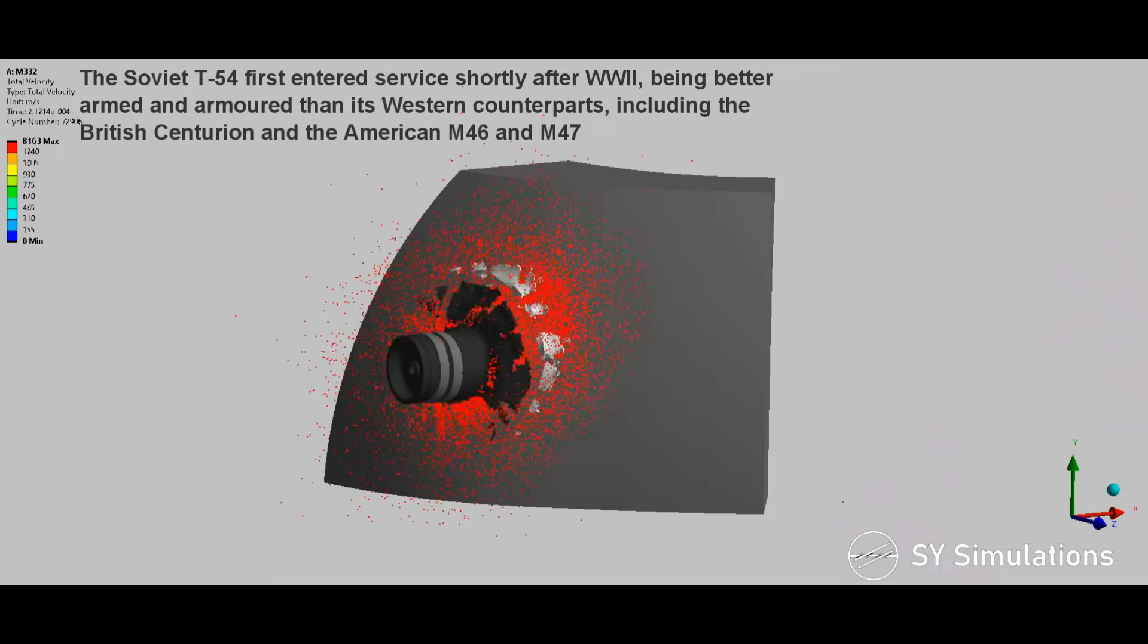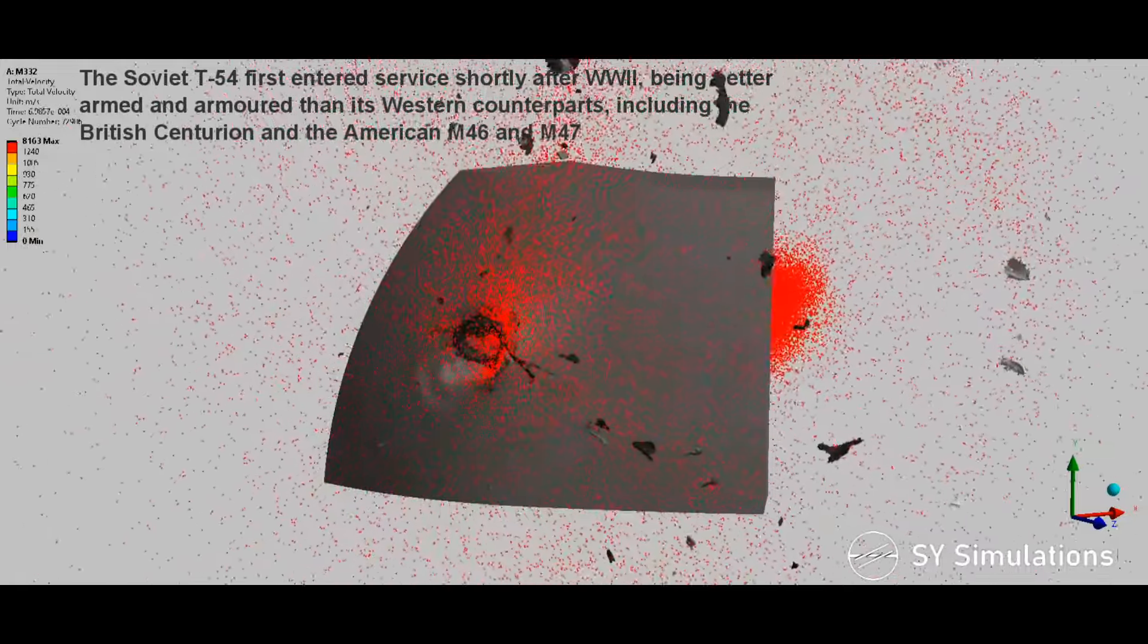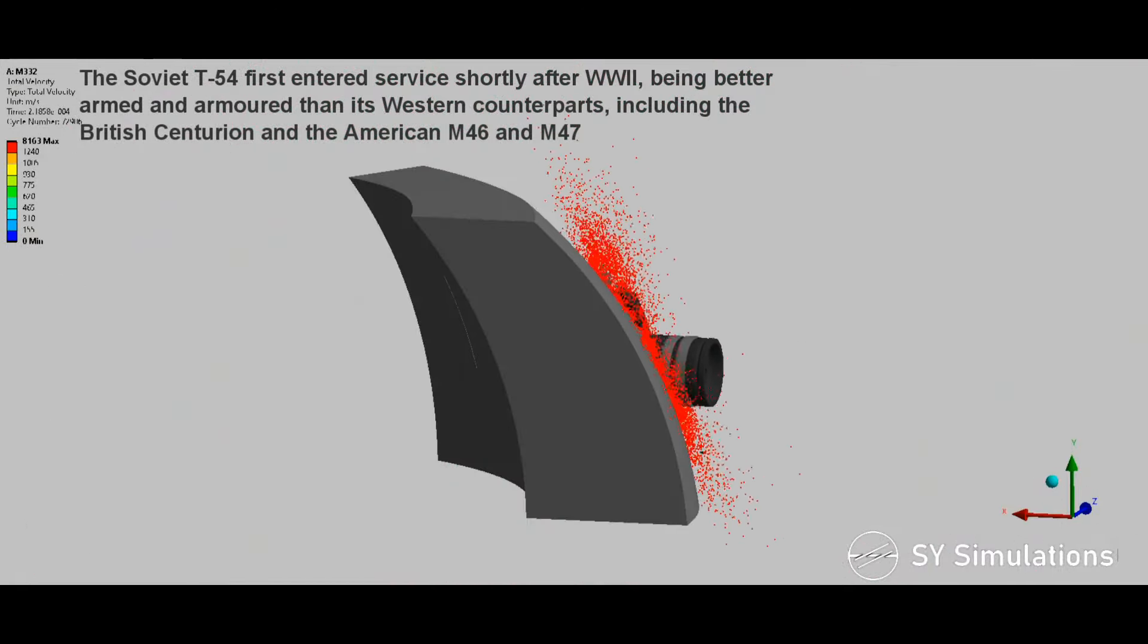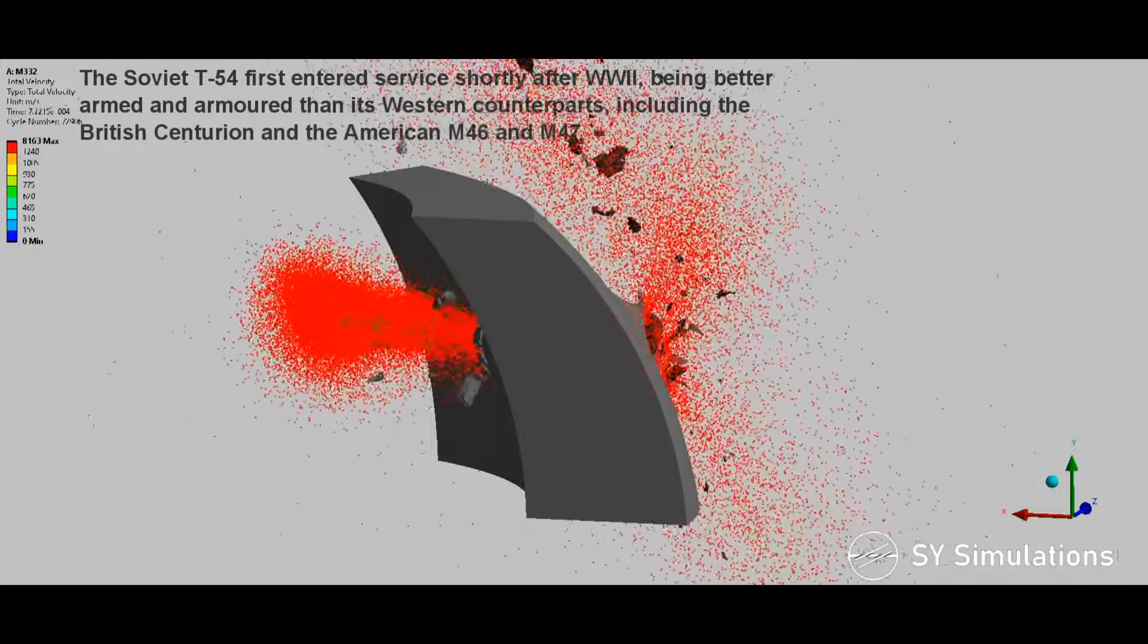The Soviet T-54 first entered service shortly after World War II, being better armed and armored than its Western counterparts, including the British Centurion and the American M-46 and M-47.